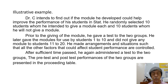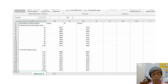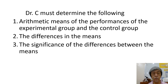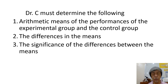The pre-test and post-test performances of the two groups are presented in the table. Dr. C must determine the following: the arithmetic means of the performances of the experimental group and the control group, the differences in the means, and the significance of the difference between the means.